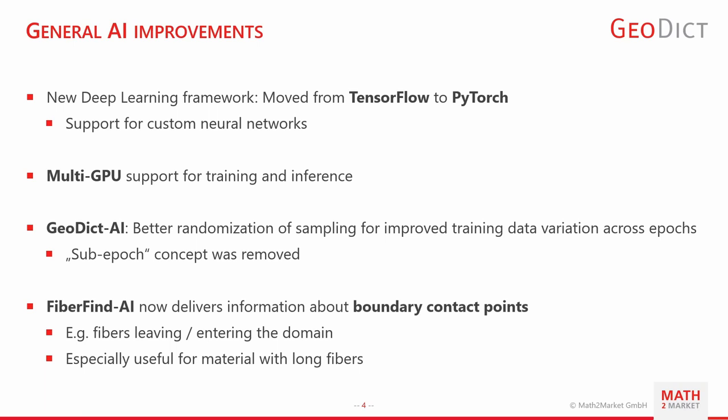Finally, the FiberFind AI statistics were expanded and it now delivers information about boundary contact points, which usually means fibers entering or leaving the domain. This is especially useful if you're analyzing statistics of materials with very long fibers where the fibers are actually longer than the domain.